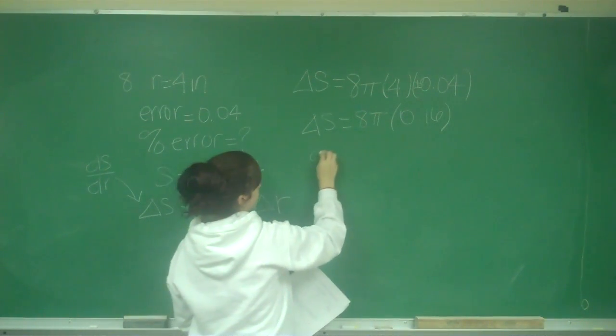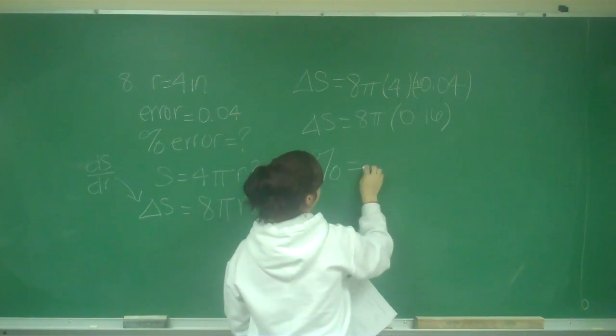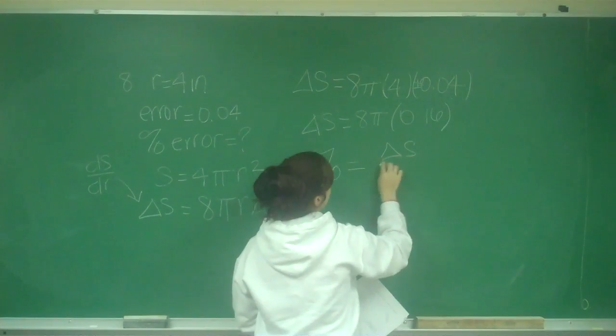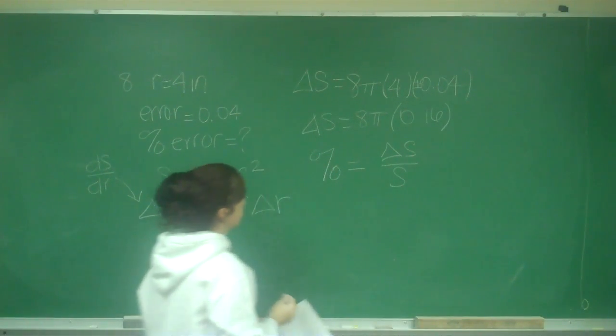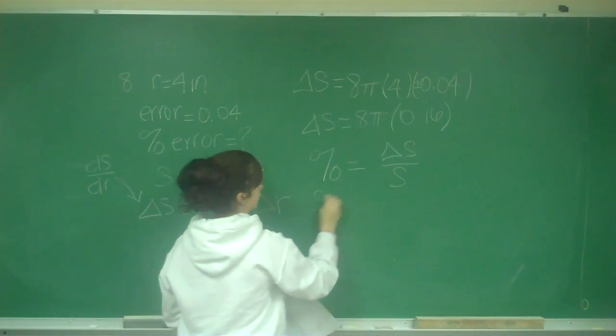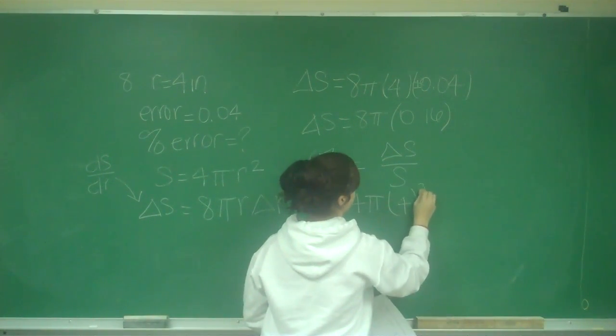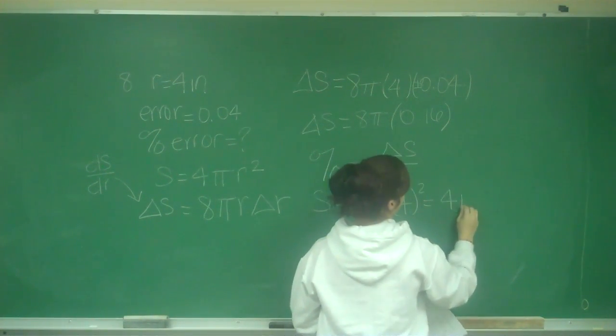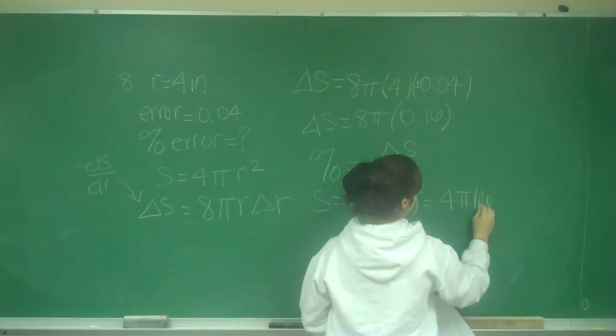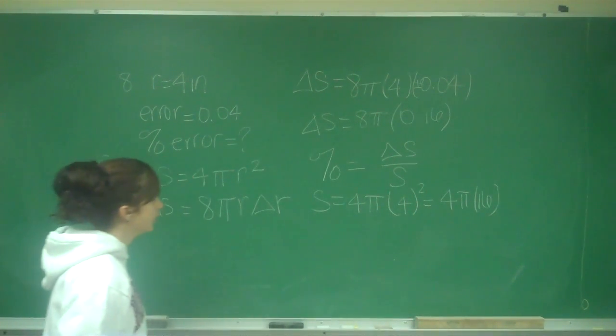Remember that percent, we're not done, because percent error equals delta S over S. So S is equal to 4 pi times 4 squared, which is 4 pi times 16.